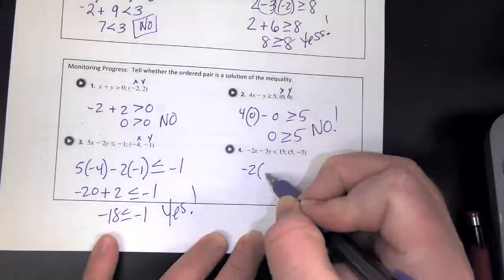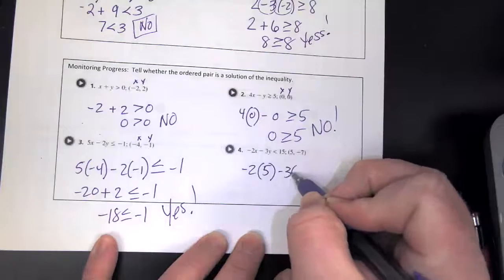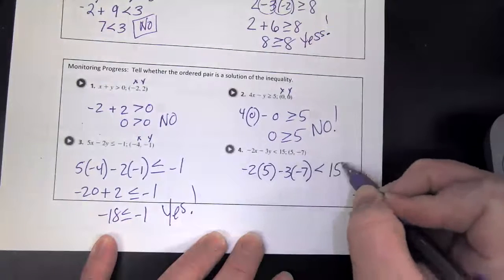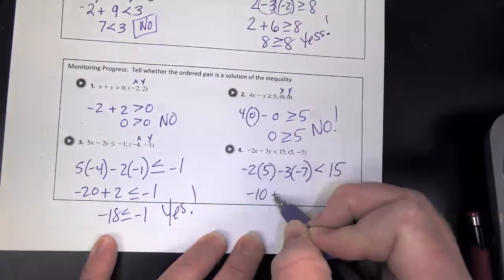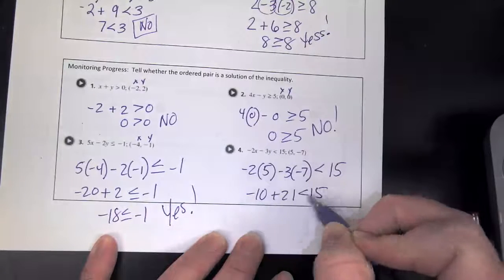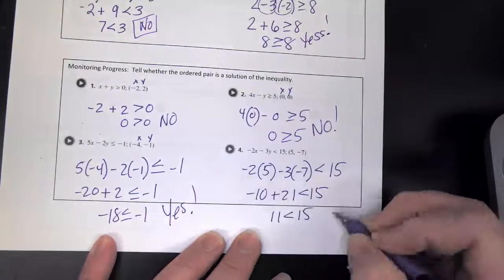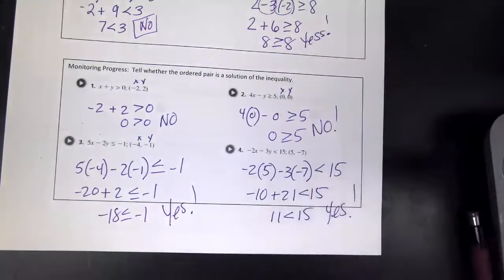I want you to stop after each one and check your work. So we're going to whip through these really quick. Are you ready? Okay, x, y, negative two plus two is greater than zero. Is zero greater than zero? No, it's equal to.